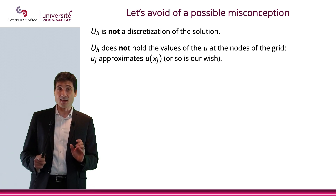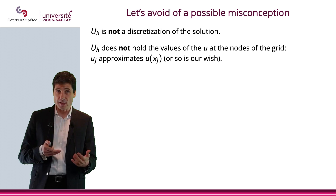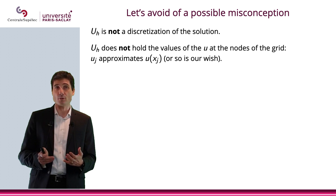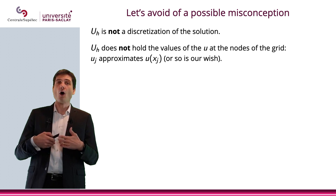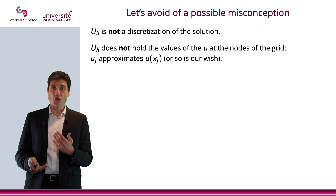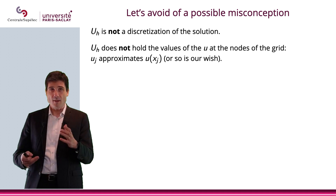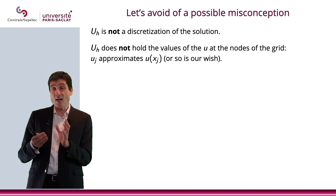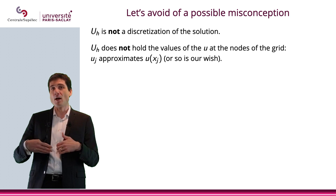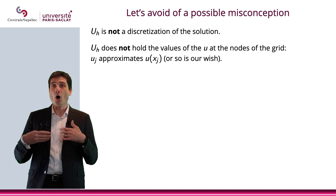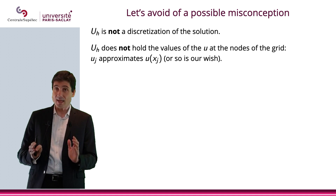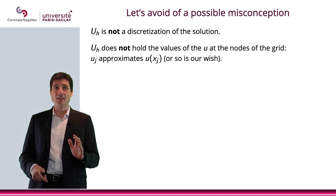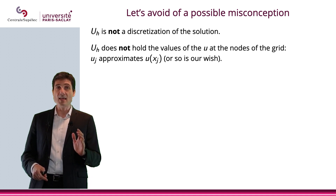What it does is, hopefully, it approximates the values of u(x_j). Hopefully, when h, the step, goes to zero, then if h is small, the approximation would be better. The smaller h, hopefully, the better the approximation. But we have not said at any time that u_j was equal to u(x_j).